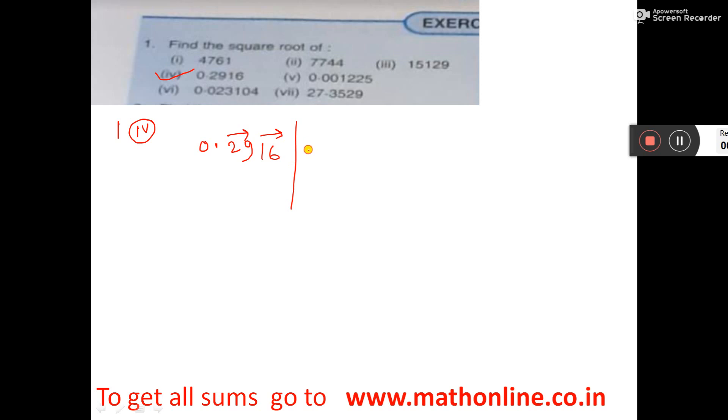Out of this 29 point, you have to give point at first because here point. So 0 point, 5s are 25, 6s are 36 becoming more. So 5, 5s are 25. Now this subtract then 4.